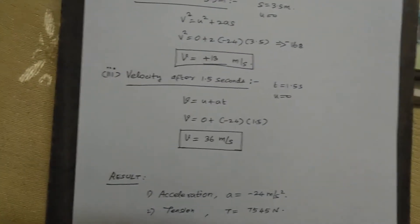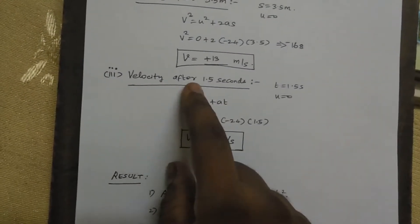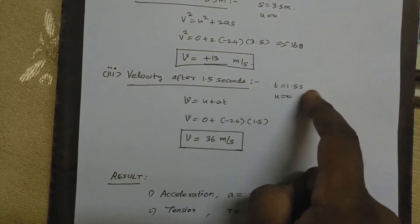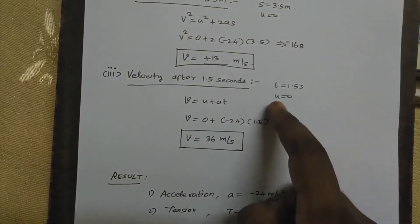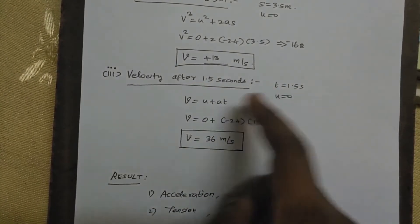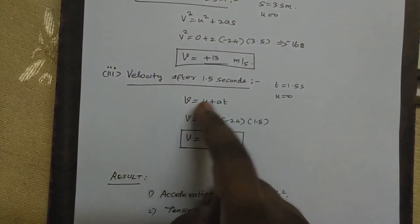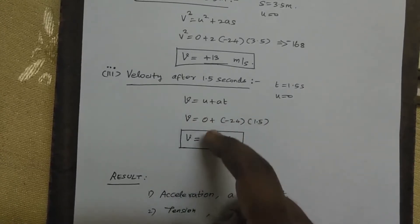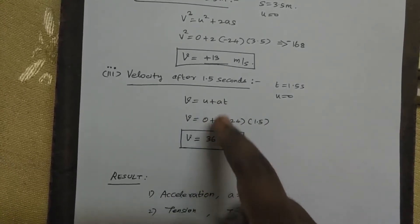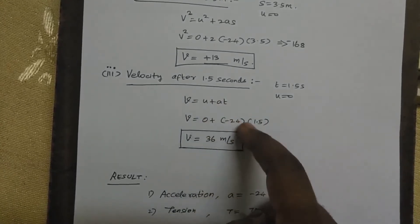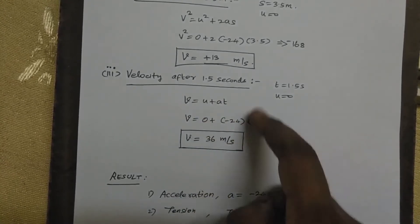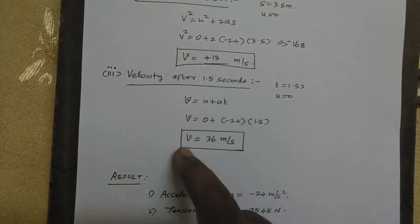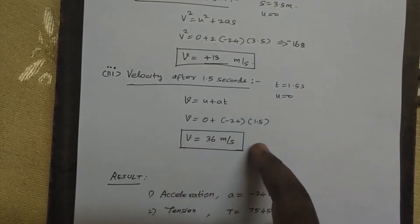Velocity after 1.5 seconds: T equals 1.5 seconds, U equals zero. Using V equals U plus AT: V equals 0 plus minus 24 times 1.5, which equals 36 meters per second.